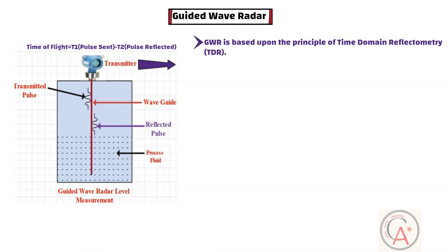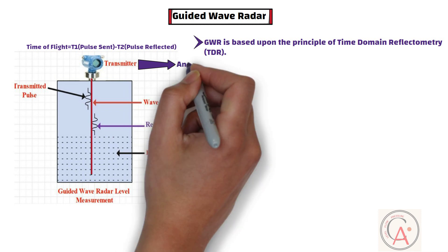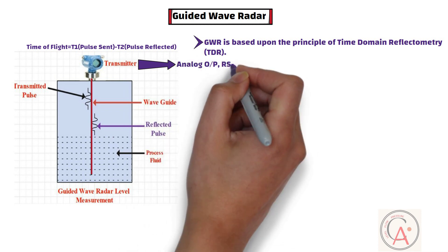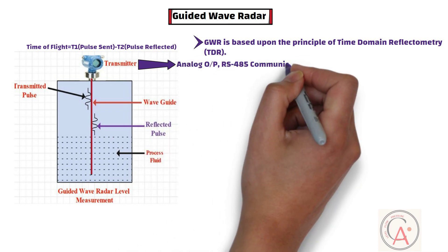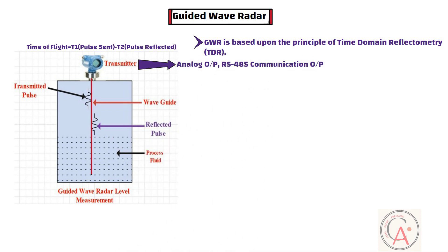The transmitter can output the analyzed level as a continuous measurement reading through its analog output, RS-485 communications output, or optional switching output, depending on the output options required.